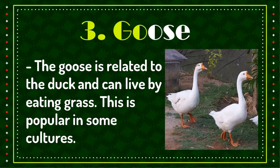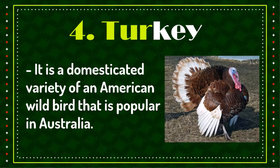Goose. The goose is related to the duck and can live by eating grass. This is popular in some cultures. Turkey. The turkey is a domesticated variety of an American wild bird. It is used for meat products and is quite popular in Australia.